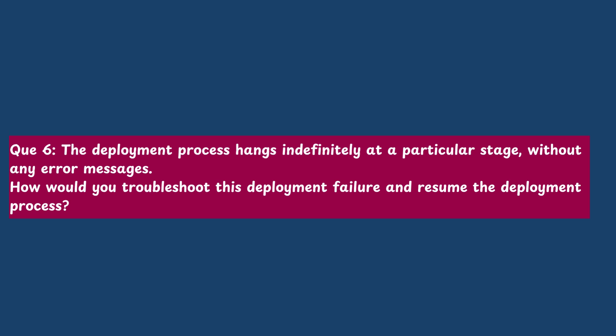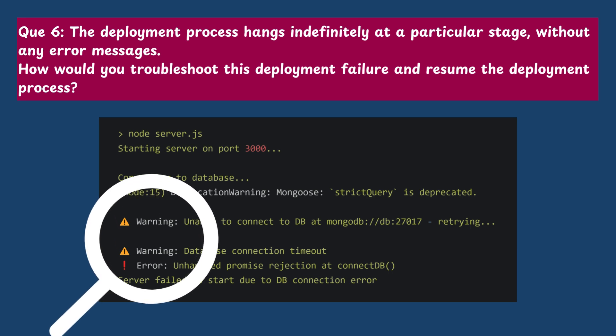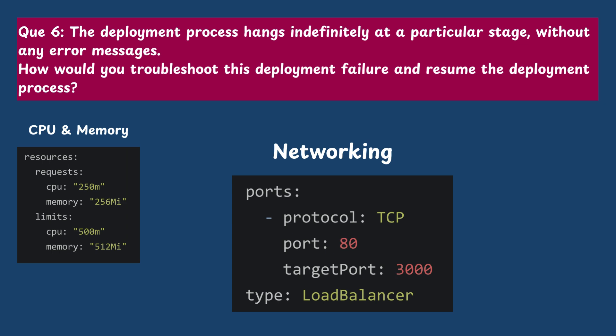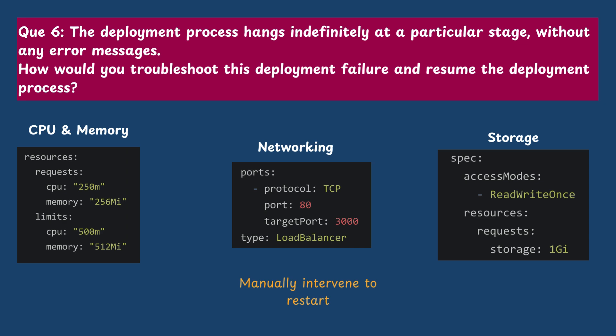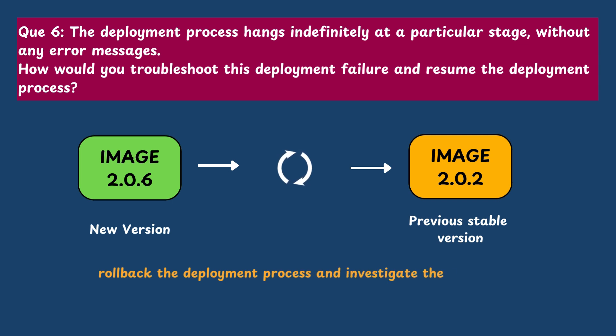Question 6: The deployment process hangs at a particular stage without any error messages. How would you troubleshoot and resume the deployment process? I would check the logs of the deployment process to identify any errors or warnings that might provide clues about the cause of the hang. If no useful information is found, I would examine the status of the underlying infrastructure components such as networking, storage, and compute resources. If needed, I would manually intervene to restart or roll back the deployment process and investigate the root cause further.